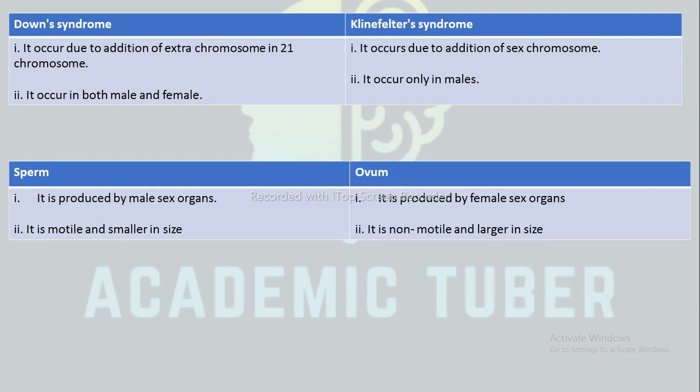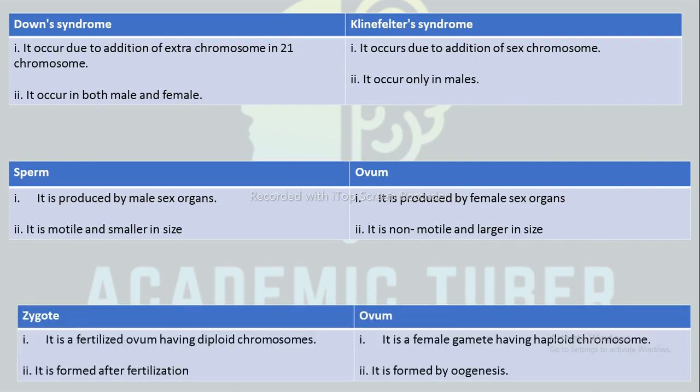Sperm is produced by the male sex organ, whereas ovum is produced by the female sex organ. Sperm is motile and smaller in size, whereas ovum is non-motile and larger in size.